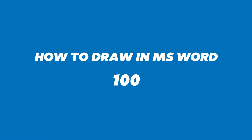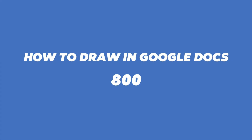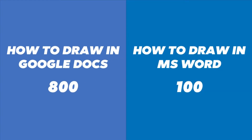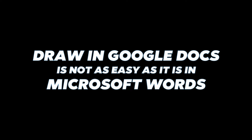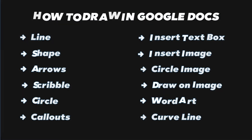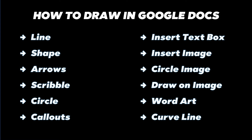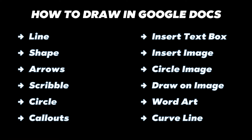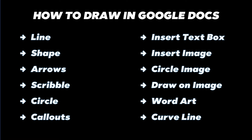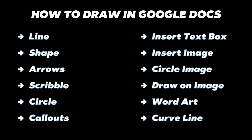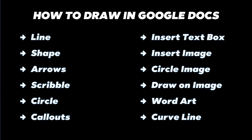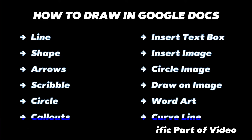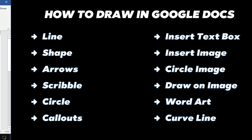How to draw in Microsoft Word is searched 100 times per month on Google, whereas how to draw in Google Docs is searched 800 times every month. The reason is simple: drawing in Google Docs is not as user-friendly as it is in Microsoft Word. That's why I'm making this tutorial, where I'll show you how to draw lines, shapes, arrows, circles, callouts, insert images, circle text, insert curved lines, and do free-hand writing with scribbles including signatures.